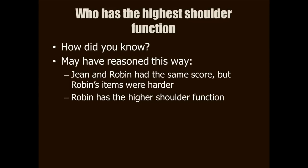The chin-ups might have given it away, but even without the animation, you would have figured it out. You may have reasoned something like this: Jean and Robin had the same response pattern — three, two, one — corresponding to little difficulty, some difficulty, and much difficulty. But Robin's items were a lot harder. Therefore, Robin has the higher shoulder function.